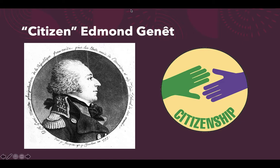Enter Edmond Genet — a Frenchman and diplomat sent by France to win support from America. Before following diplomatic procedure and getting his credentials in order with Washington, he began recruiting Americans to fight for the French army against the British. This was a violation of American neutrality, and President Washington was very upset. He demanded that the French recall Edmond Genet — that he be sent back to France. But by then, his political backers had fallen from power in France, and if he returned he might be imprisoned or beheaded. So he ultimately stayed in the United States and became an American citizen.